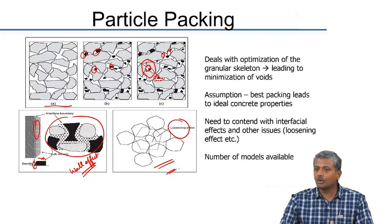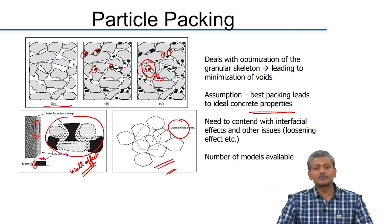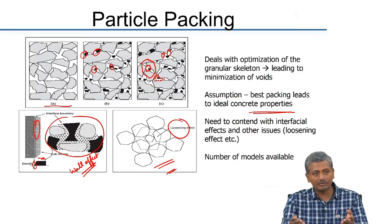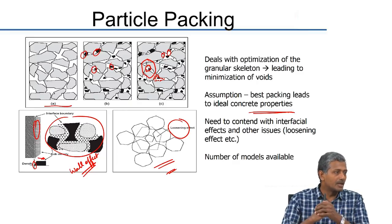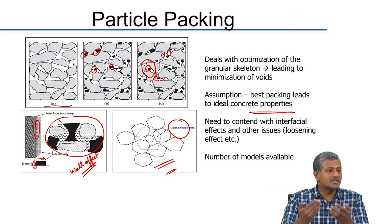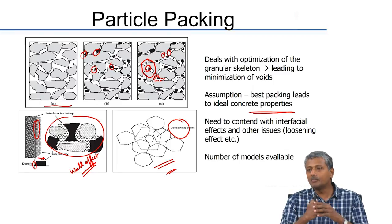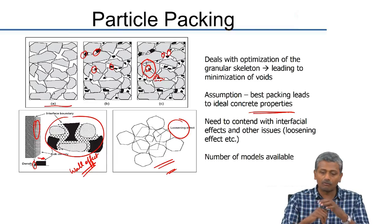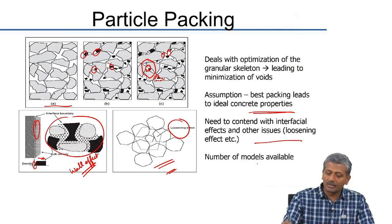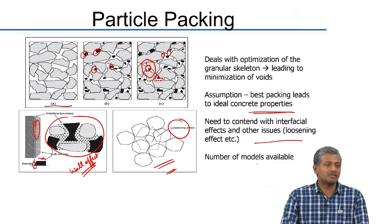The assumption in all this is that the best packing leads to ideal concrete properties. With respect to strength, if we pack more volume with solids we have lesser porosity, so obviously we will have better strength. With respect to workability, it is a bit harder — you are trying to maximize the density of the material, so you need to determine how best you can optimize the paste properties to make the material flow. The wall effect and loosening effect have to be looked at seriously to consider what best you can achieve with the given set of materials.